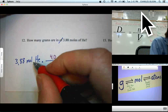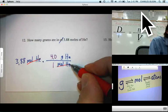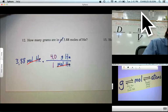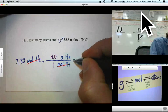Let's see. Moles of helium divided by moles of helium cancels. We're left with grams of helium. That's what we want. So, let's write our answer.